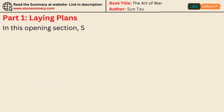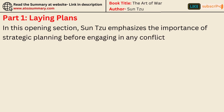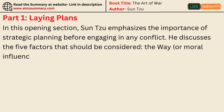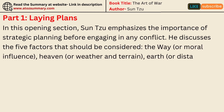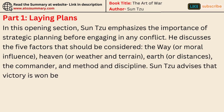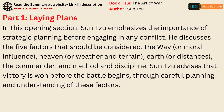In the opening section, Sun Tzu emphasizes the importance of strategic planning before engaging in any conflict. He discusses the five factors that should be considered: the way, or moral influence; heaven, or weather and terrain; earth, or distances; the commander; and method and discipline. Sun Tzu advises that victory is won before the battle begins, through careful planning and understanding of these factors. He stresses the importance of flexibility and adaptability, urging commanders to assess the situation and adjust their plans accordingly.